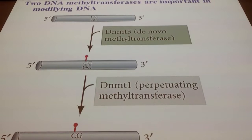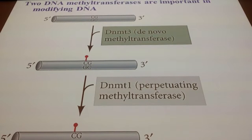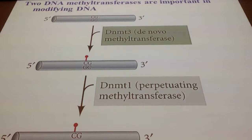Perpetuating methyltransferase activity is inherited from your parents, and your cells will remember — these perpetuating methyltransferases will remember which promoter to methylate. So when it comes to epigenetic memory, it involves perpetuating methyltransferase. The trithorax and polycomb proteins refer to the structure of the chromosome; perpetuating methyltransferase refers to modification of the DNA. Perpetuating correlates with epigenetic memory.